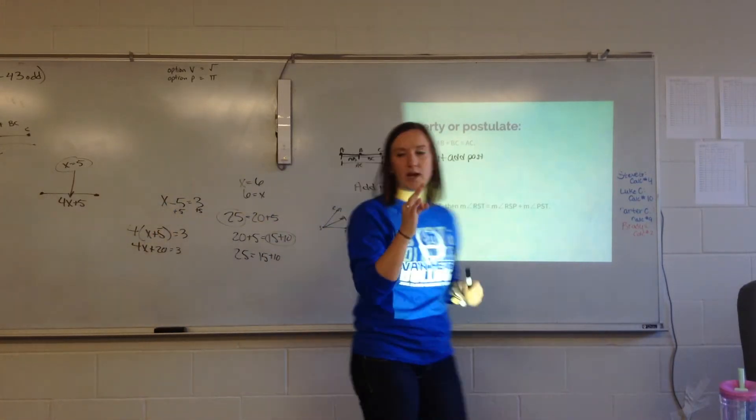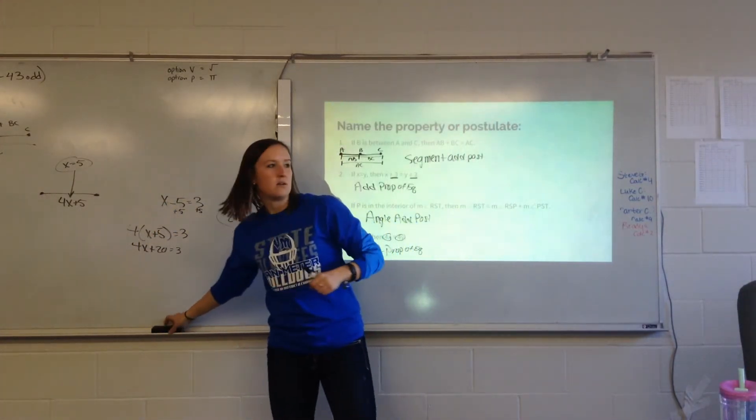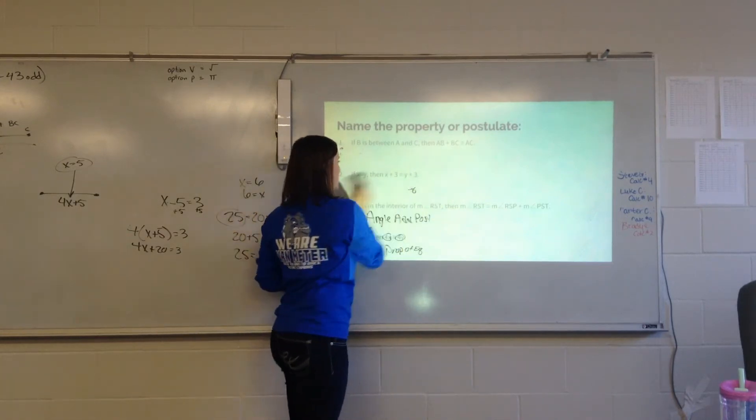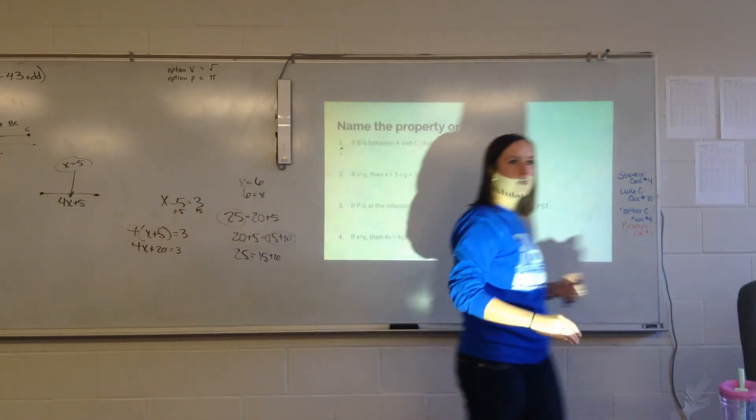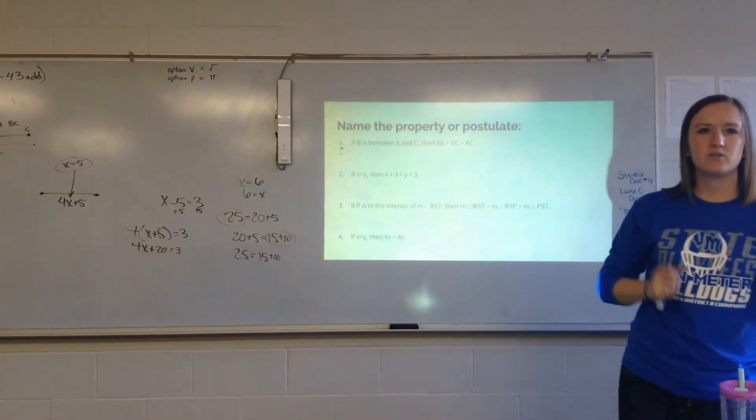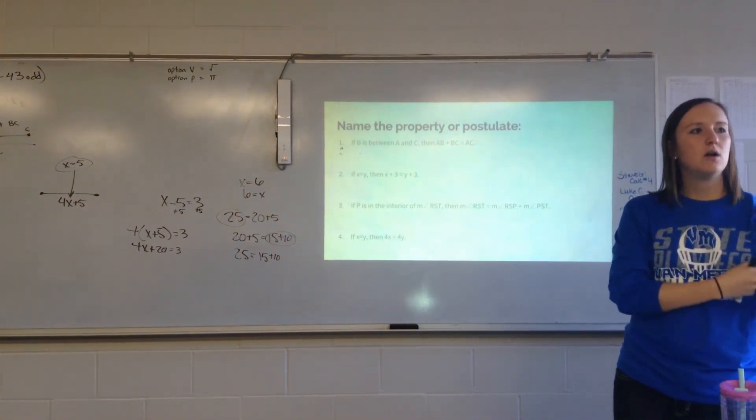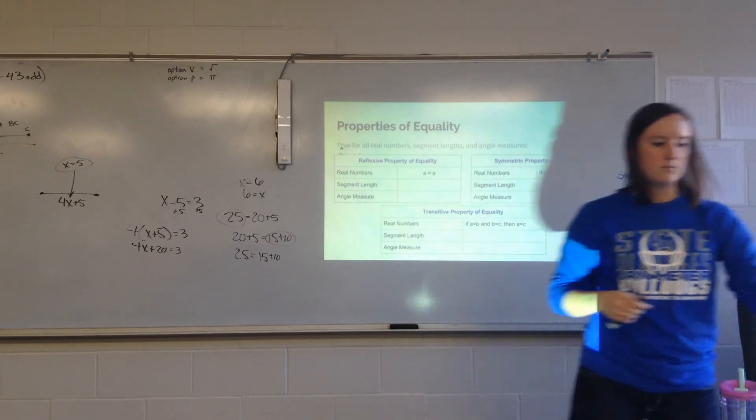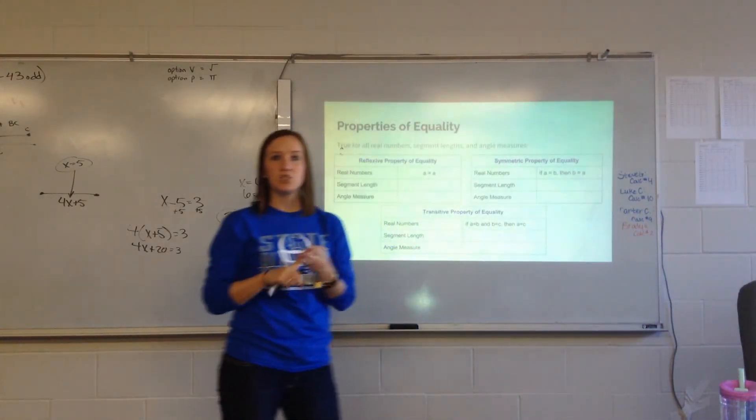Now, there's three other properties that were on that page 107. What were they? Does anybody remember? Symmetric. Transitive. Reflexive. Right. So they're reflexive, symmetric, and transitive.